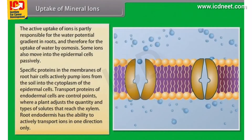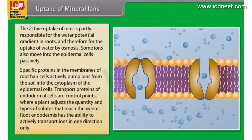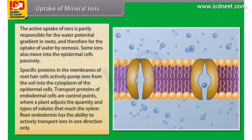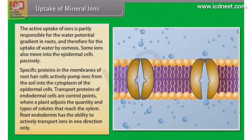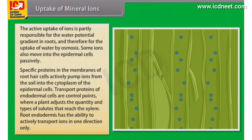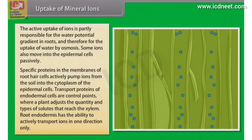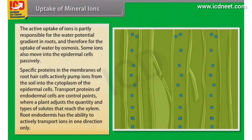Like all cells, the endodermal cells have many transport proteins embedded in their plasma membrane. They let some solutes cross the membrane but not others. Transport proteins of endodermal cells are control points where a plant adjusts the quantity and types of solutes that reach the xylem. The root endodermis, because of the layer of suberin, has the ability to actively transport ions in one direction only.